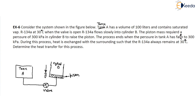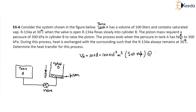The volume of Tank A is 100 liters, which equals 100 × 10⁻³ cubic meters. It contains saturated vapor at 30 degrees centigrade.